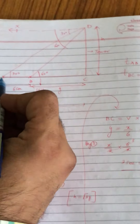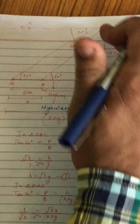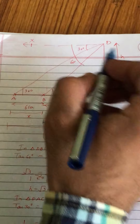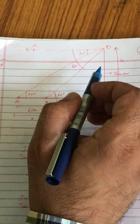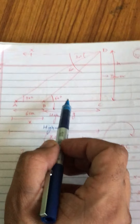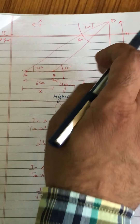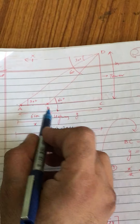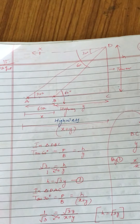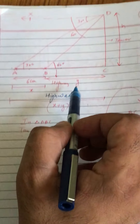Figure ko acche se dekhiye — yeh koi highway hai, neeche zameen par. Yeh koi tower hai DC, jiski height maine h maani hai. Depression ka question hai — car hai jo A position se B position tak aa rahi hai, to angle of depression ka change ho raha hai 30 se 60. Elevation ke case mein, hamesha tower ke paas wala angle bada hoga — jaise tower se door hote jaoge, angle chhota hota jayega. AB ko maine X maana hai, BC ko Y maana hai, to poora AC = X plus Y.